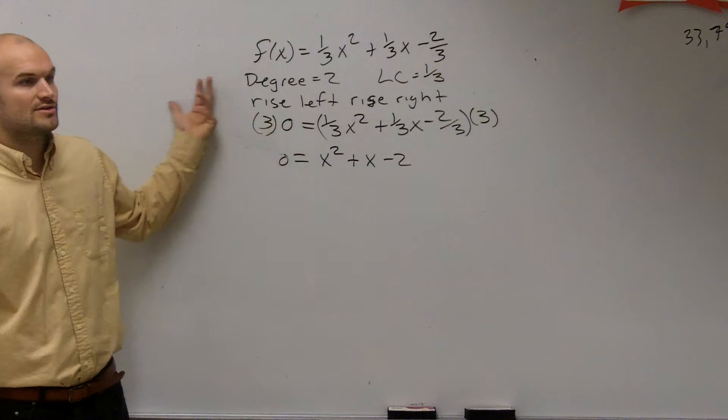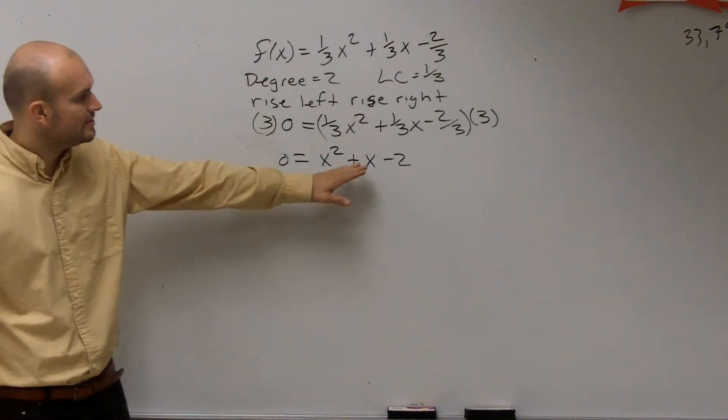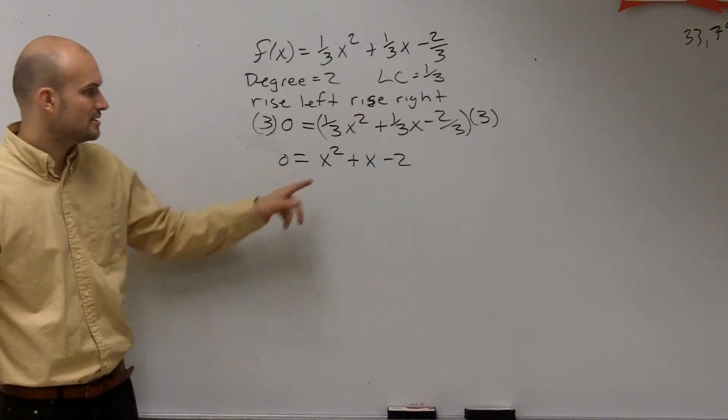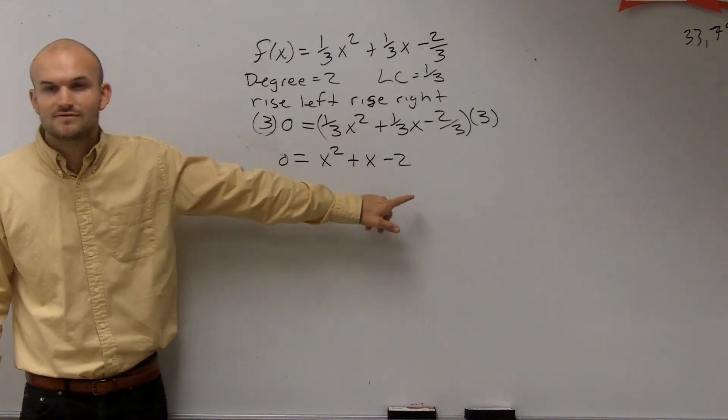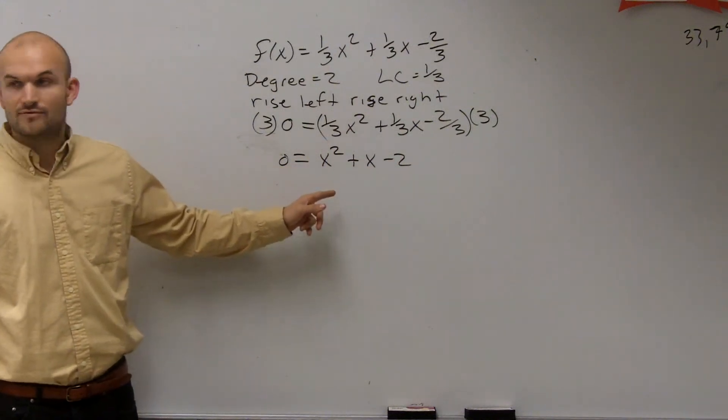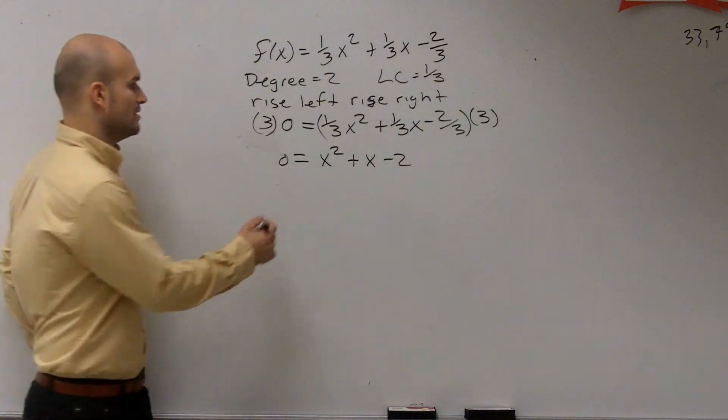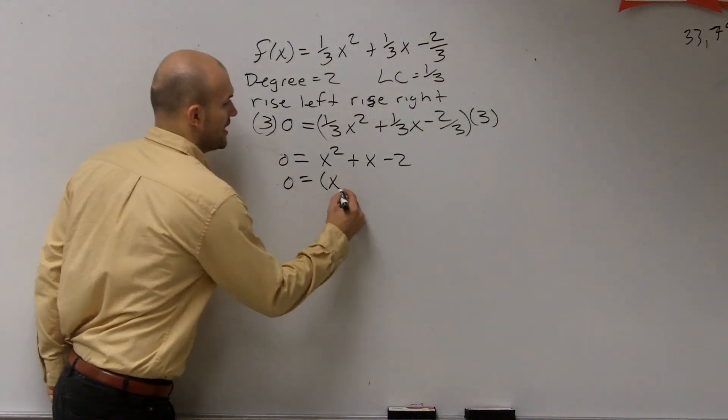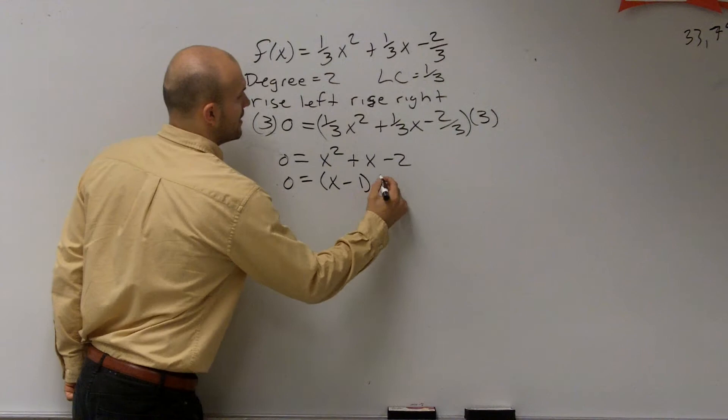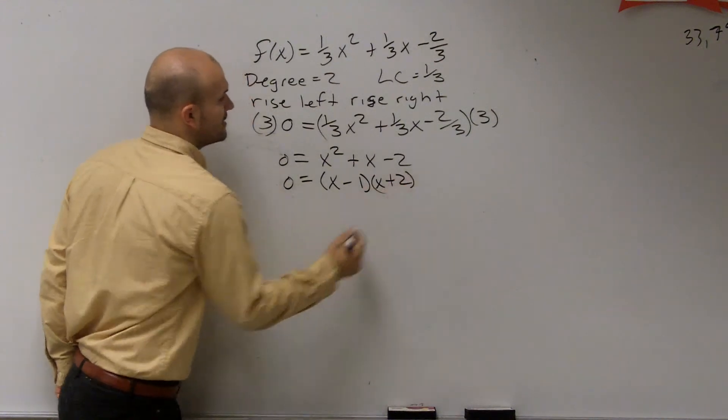I mean, you can still do the work with the fractions, but why have to do all that necessary work if you can just get rid of them? So now I look at this and say, can I factor this? Is there two numbers that multiply to give me negative 2, but then add and give me positive 1? And you're right, yes, it's 0 equals x minus 1 and x plus 2.